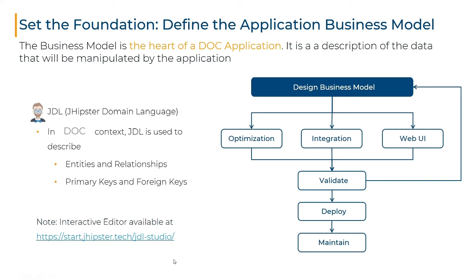When using the platform you will describe your business data model using the JDL language. JDL stands for JHipster Domain Language. JHipster is an open source project that allows describing in JDL a set of microservices that lets you generate part of the corresponding code automatically. In the platform context, we will use JDL only for the description of the business model. The remaining parts of the application will be generated using different tools. In a JDL language, you describe entities. Each entity has simple attributes and may also have relationships with other entities. Primary keys may be associated with entities to describe how instances of a given entity can be uniquely identified.